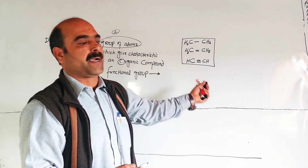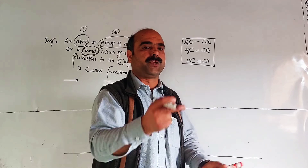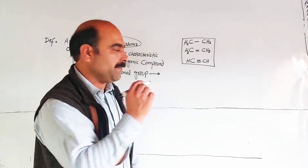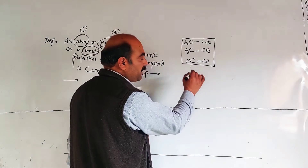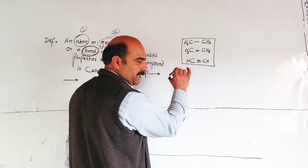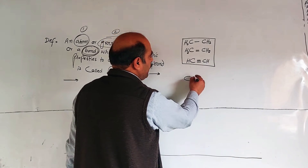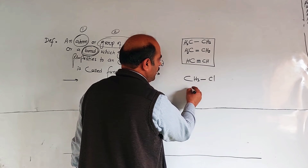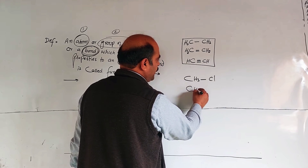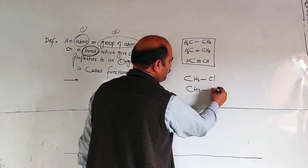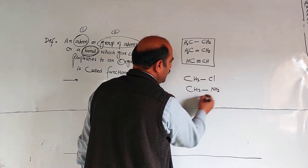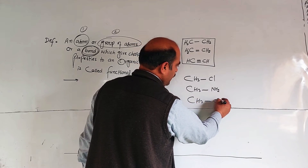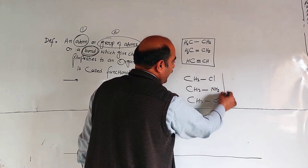An atom, group of atoms, or bond through which we can differentiate between organic compounds. For example: CH3CN, CH3NH2, and CH3OH — these are different compounds based on their functional groups.